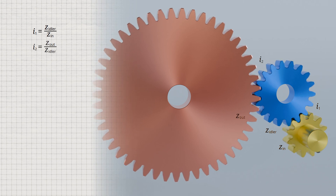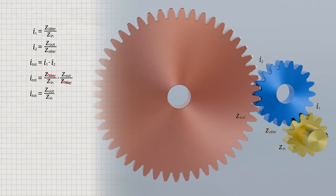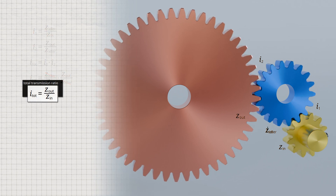The second gear stage is formed by the blue idler gear and the red output gear. The gear ratio of this stage also results from the ratio of the number of teeth of the two gears. The total transmission ratio of this two-stage stationary gearbox — also called the stationary transmission ratio — is calculated by multiplying the individual gear ratios I1 and I2. It can now be seen that only the number of teeth of the output gear and the input gear are relevant for the overall transmission ratio; the number of teeth of the idler gear has no influence on this.